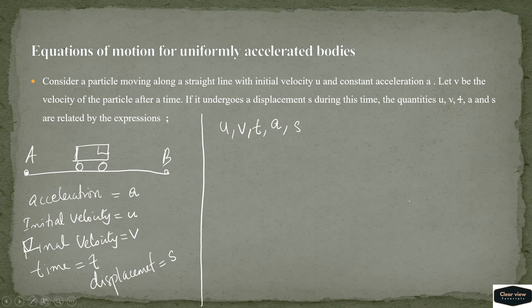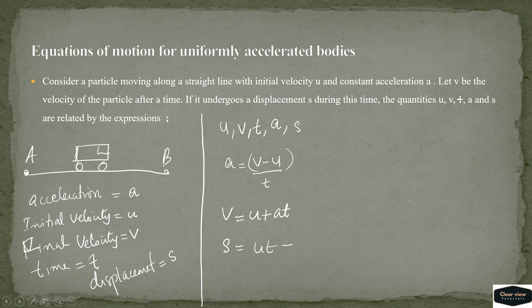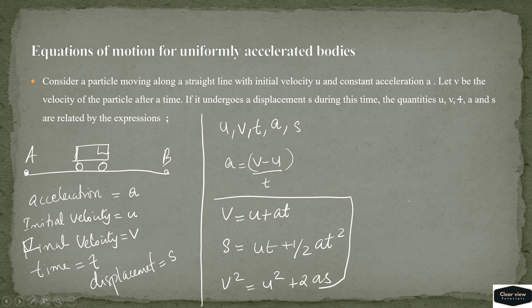The first equation of motion is derived from acceleration: a = (v − u)/t, giving v = u + at. The second equation is s = ut + ½at². The third equation is v² = u² + 2as. These are the three equations of motion for uniformly accelerated bodies.